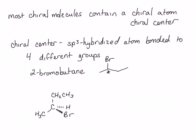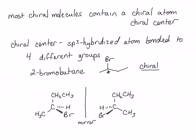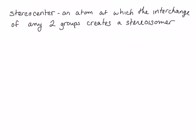Here is our chiral center drawn out in perspective. We know this is a chiral center because when we draw its mirror image, that mirror image is non-superimposable. Because 2-bromobutane has non-superimposable mirror images, it is chiral. These two non-superimposable isomers are called enantiomers — mirror image isomers, another type of stereoisomer that differs in the arrangement of atoms in three-dimensional space. A chiral center is one type of stereocenter: an atom at which the interchange of any two groups creates a stereoisomer. All chiral centers are stereocenters, but not all stereocenters are chiral centers.